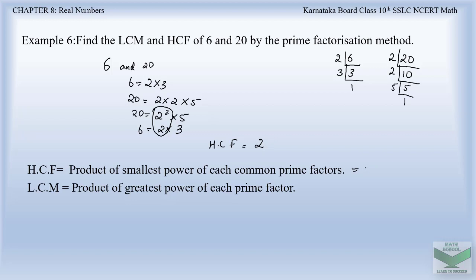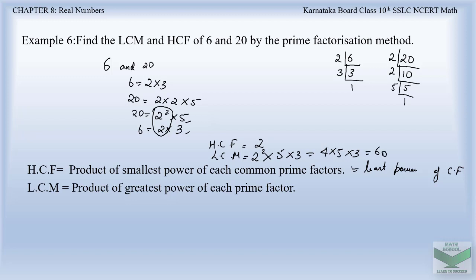LCM is the product of the greatest power of each prime factor. We take the greatest power of the common factor and also include factors which are not common. Here 5 and 3 are not common. So LCM is 2 squared into 5 into 3, which is 4 fives are 20, and 20 into 3 is 60. So LCM is 60.